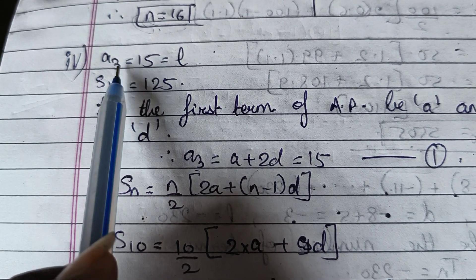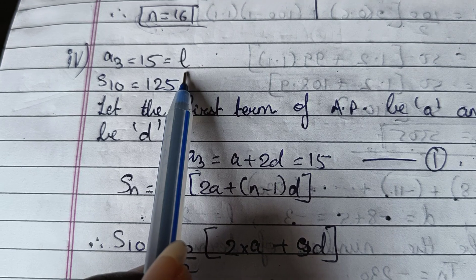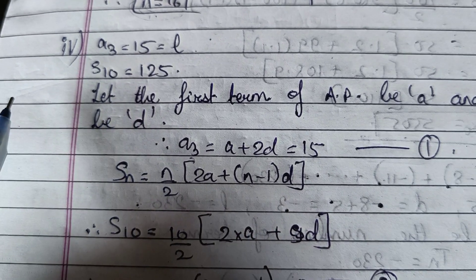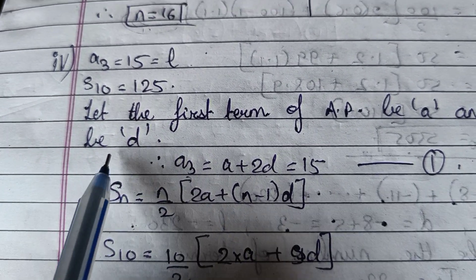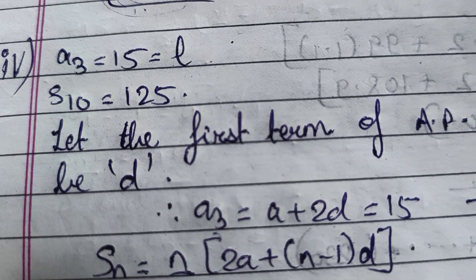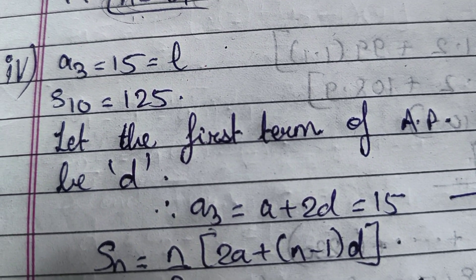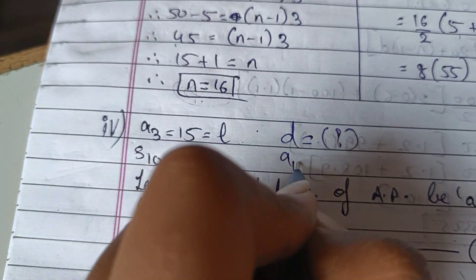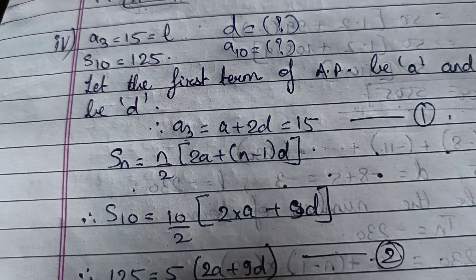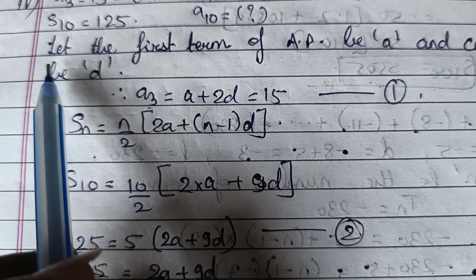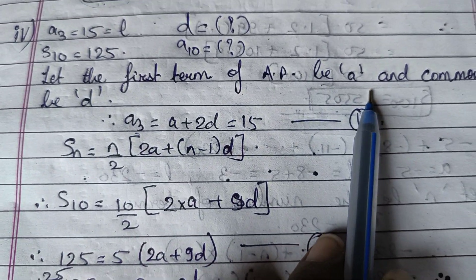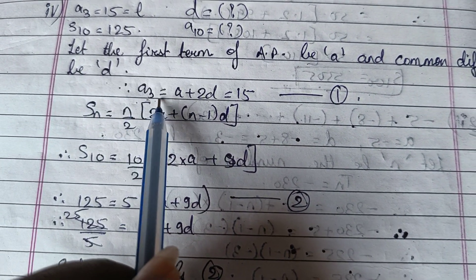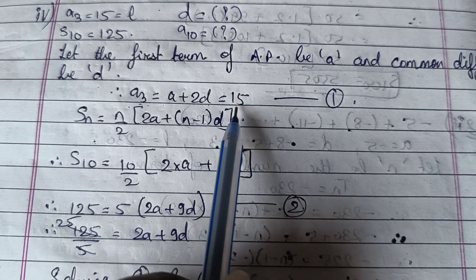Sub-question 4: A3 = 15 and S10 = 125 are given. We want to find D and A10 — the common difference and 10th term. Let the first term be A and common difference be D. A3 = A + 2D = 15, which is Equation 1.